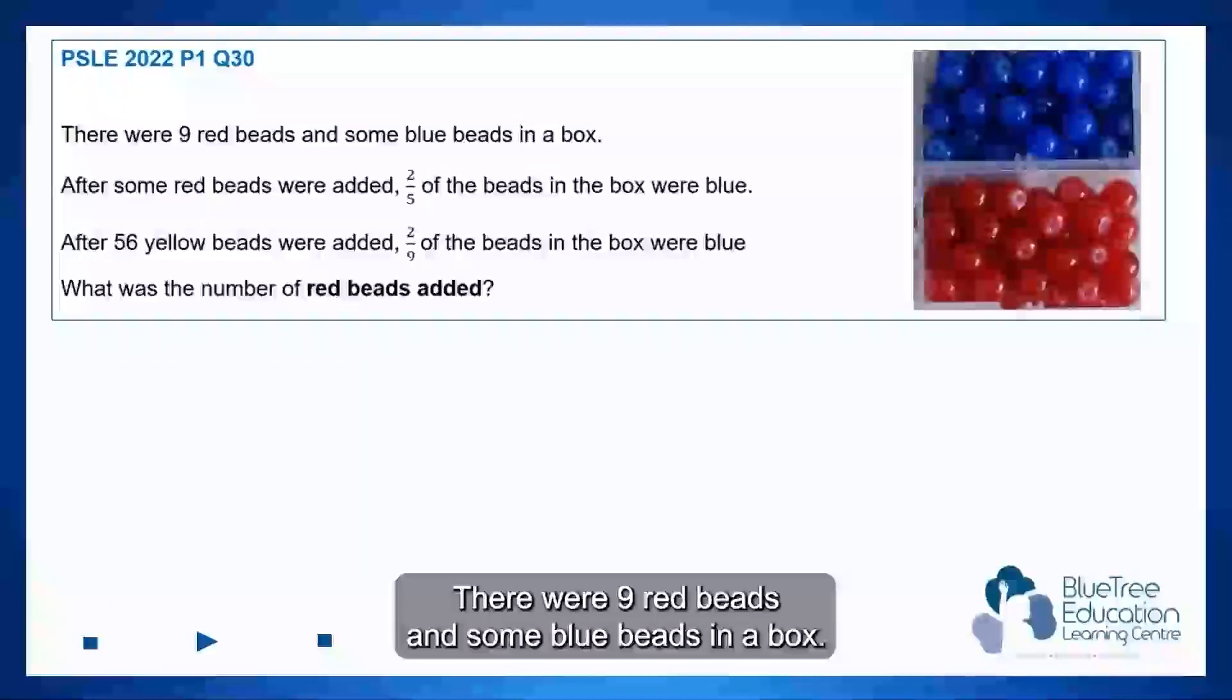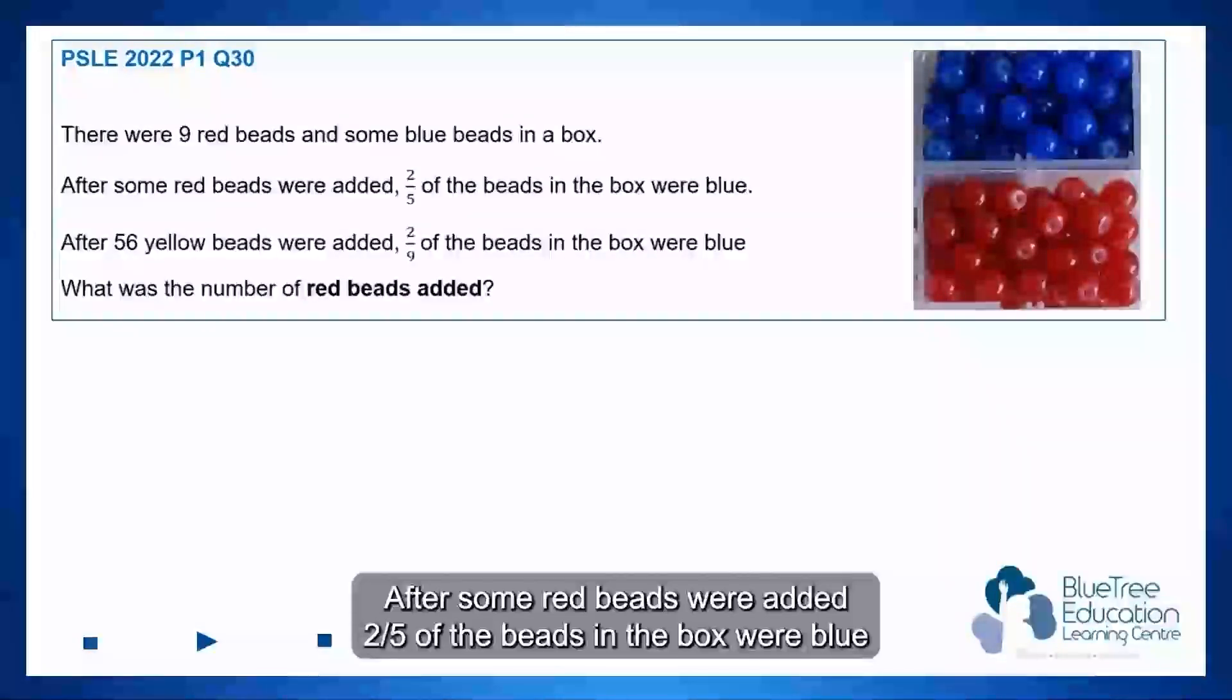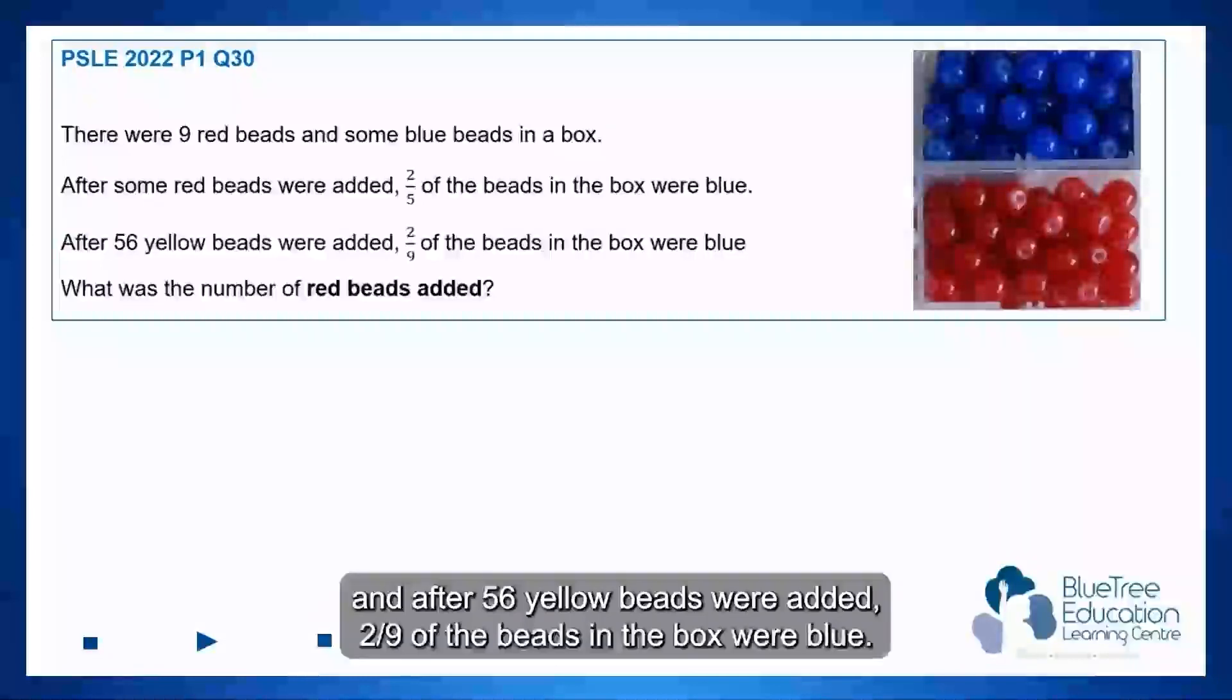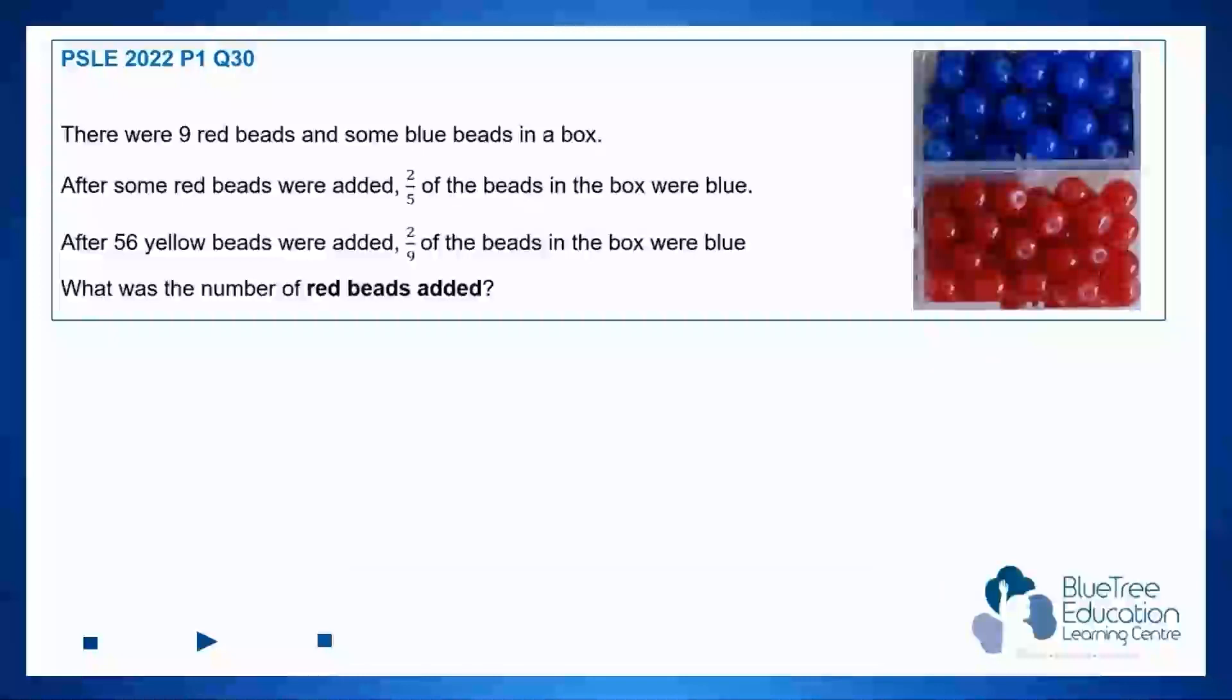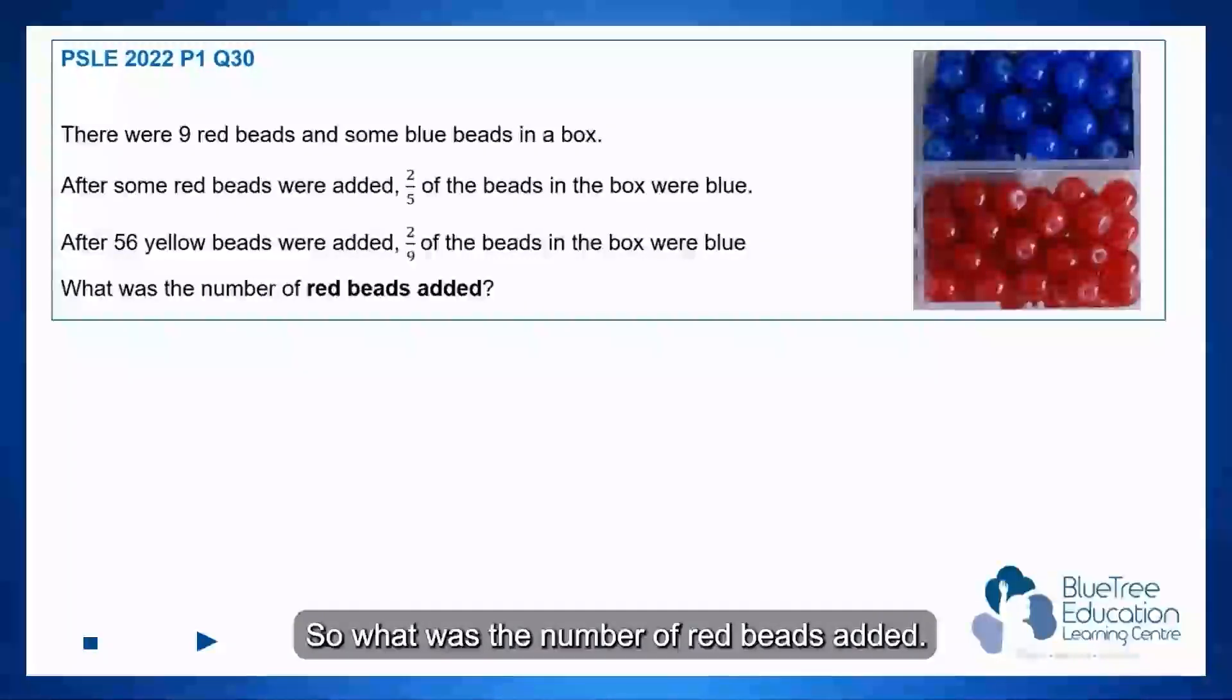There were nine red beads and some blue beads in a box. After some red beads were added, two-fifths of the beads in the box were blue. After 56 yellow beads were added, two-ninths of the beads in the box were blue. What was the number of red beads added?